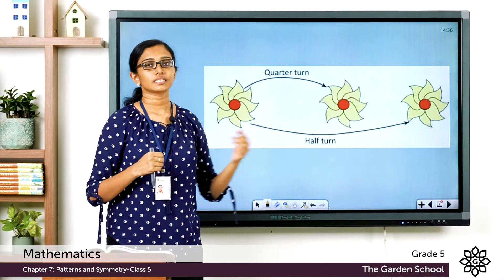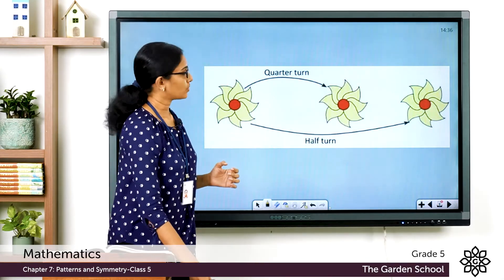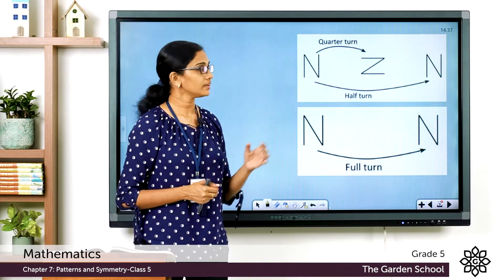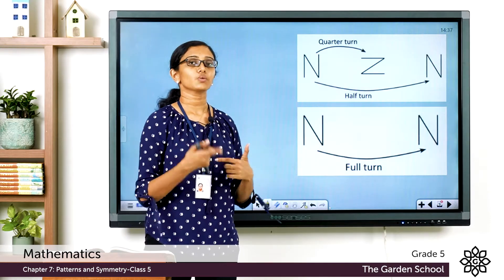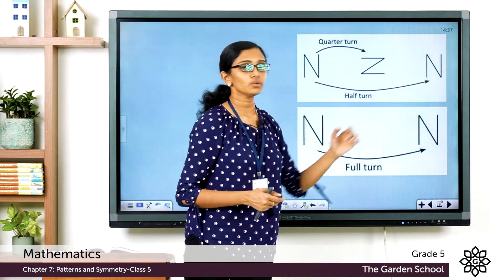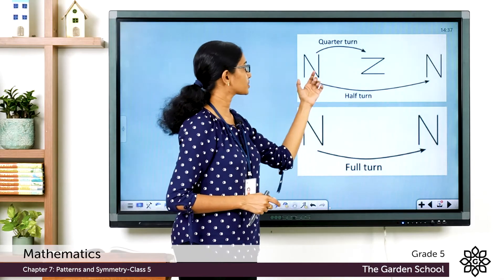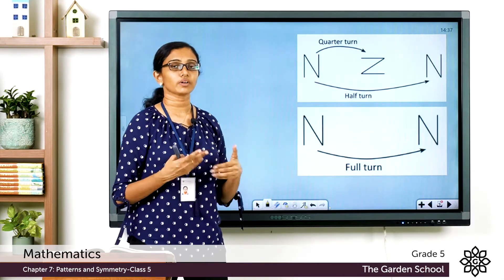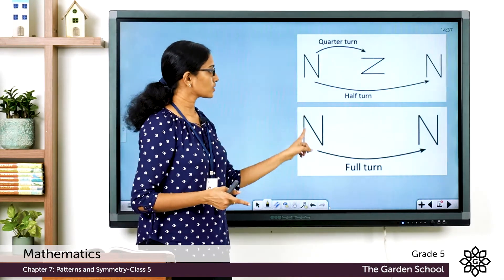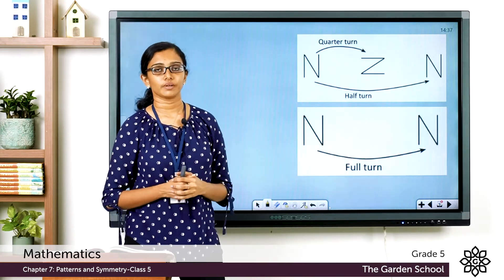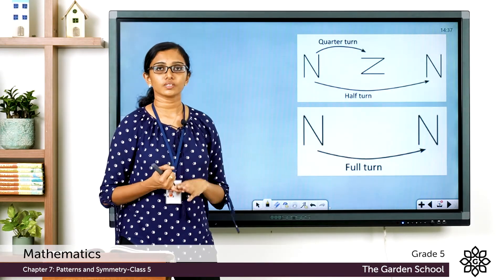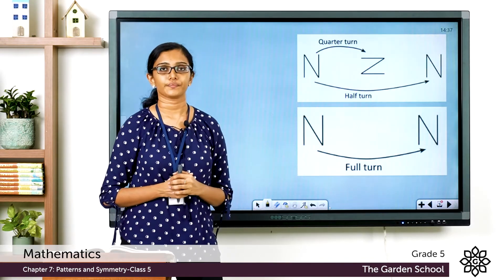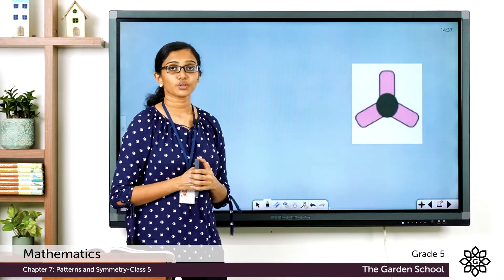After a half turn it still looks the same. Now here you can see the letter N. After a quarter turn or one-quarter turn it looks like this. It goes through another quarter turn, so now it has gone through a half turn, and the half-turned image looks exactly the same as the first image. After a full turn it also looks the same. So the letter N looks the same after a half turn and after a full turn.